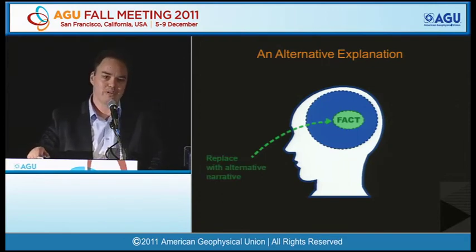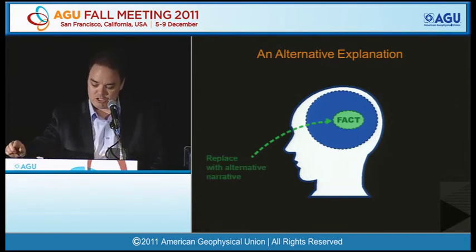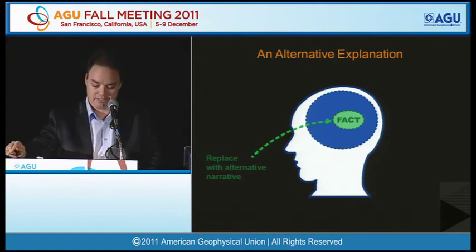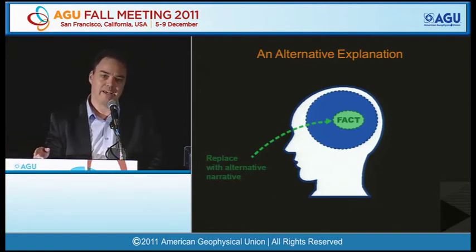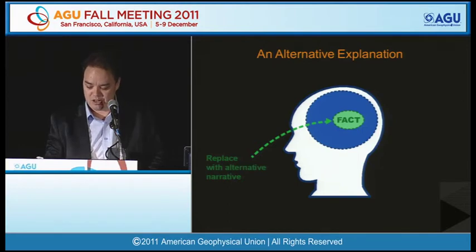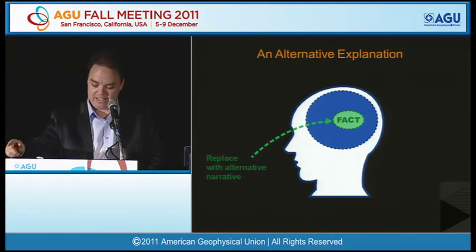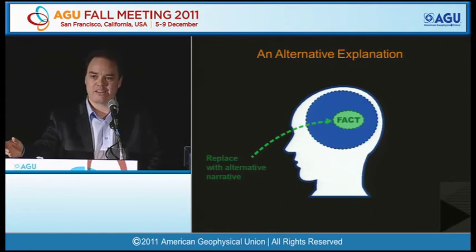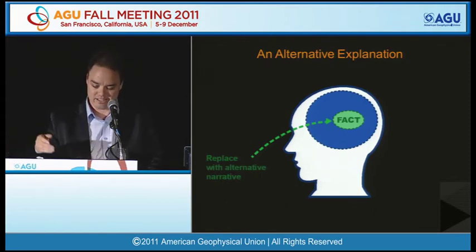An important aspect of effective debunking is to provide an alternative explanation. In the warehouse fire experiment, when an alternative explanation involving lighter fluid and stationery was provided, people were less likely to cite the paint and the gas cans.